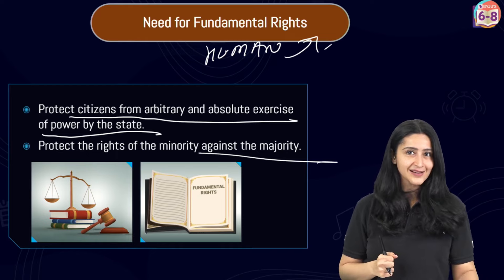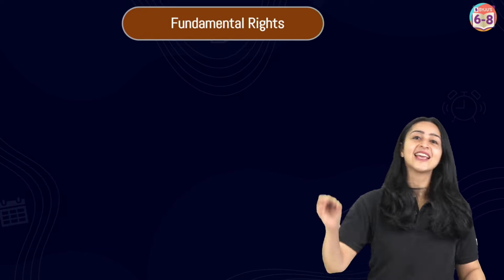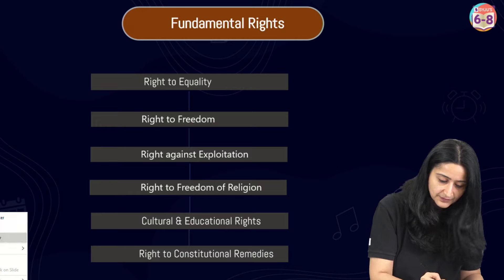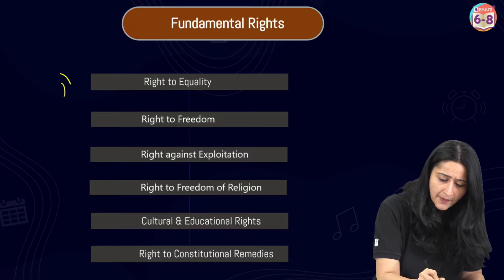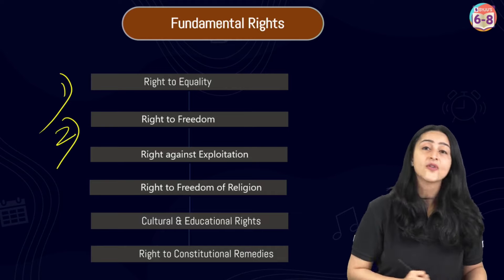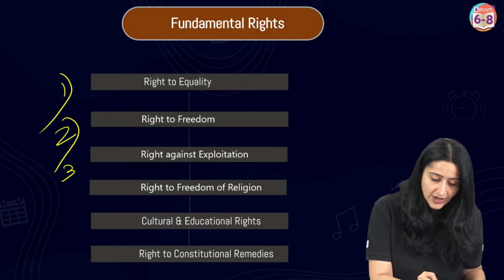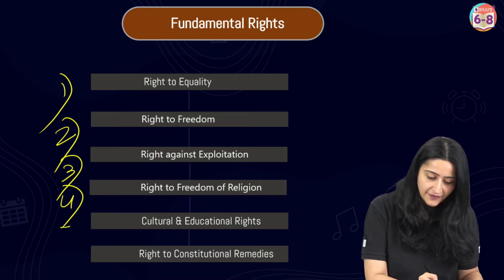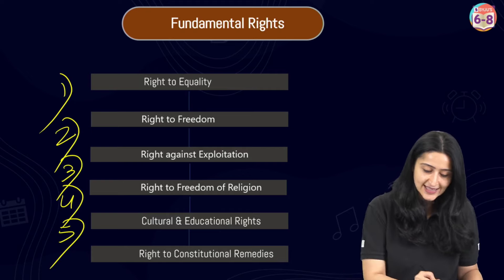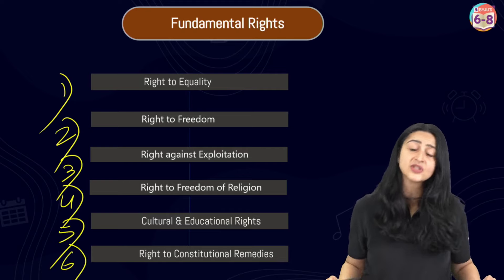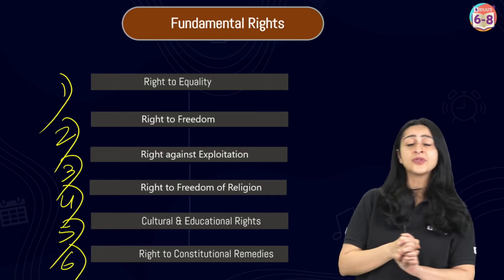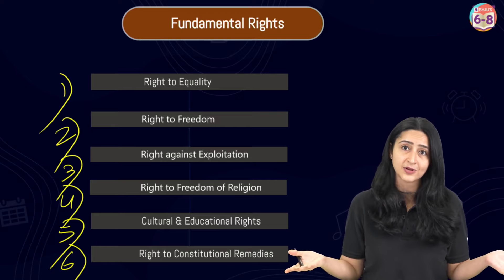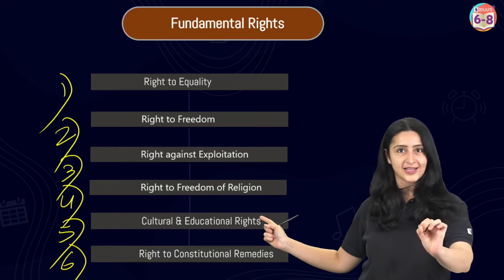There are six fundamental rights given to us by the Constitution: number one, right to equality; number two, right to freedom; number three, right against exploitation; number four, right to freedom of religion; number five, cultural and educational rights; and number six, right to constitutional remedy. You may get a question asking you to list the fundamental rights — these are the six to mention.